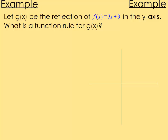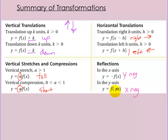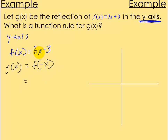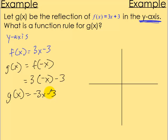Let g(x) be the reflection of f(x) equals 3x minus 3 in the y-axis. What is the function rule for g(x)? If you reflect on the y-axis, you make the x negative. So g(x) equals f(negative x). Substituting negative x in for x: g(x) equals 3 times negative x minus 3, which gives negative 3x minus 3. So the function rule for g(x) equals negative 3x minus 3.